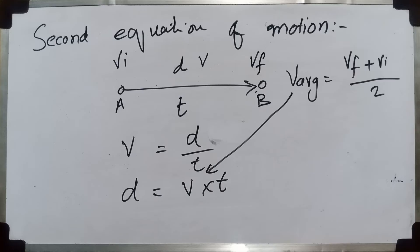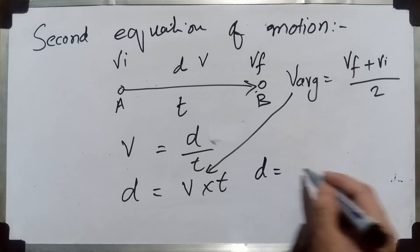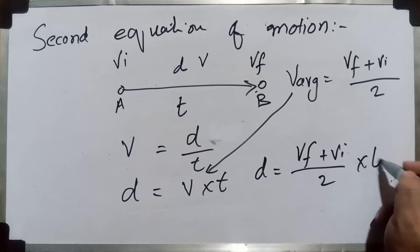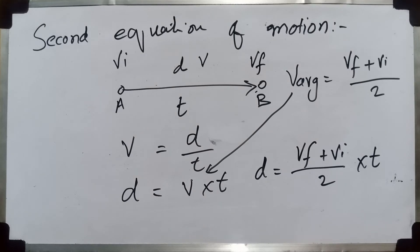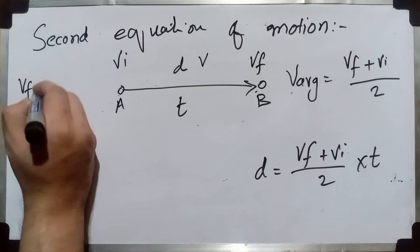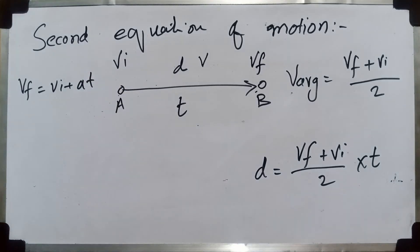We will use average velocity, where average velocity equals final velocity plus initial velocity divided by two. Using that notion, we write the distance expression with average velocity. Now I'm going to substitute the final velocity value from the first equation of motion, which was: final velocity equals initial velocity plus acceleration times time.